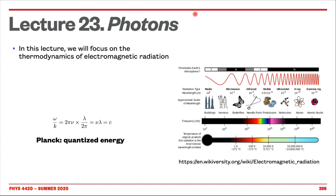We are going to talk about the spectrum and see that the physics depends on where on the spectrum we are located. We are going to see other versions of this graph later. But the idea will be to see what happens for matter that interacts with photons at a finite temperature. So we are basically going to look at the thermodynamics of radiations.